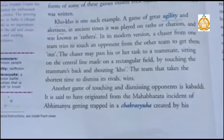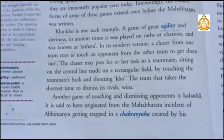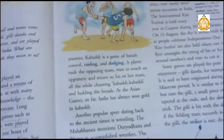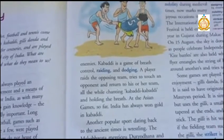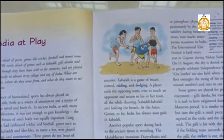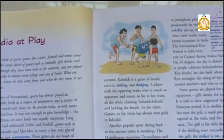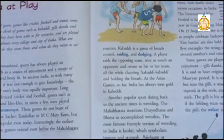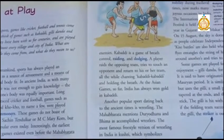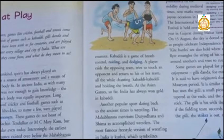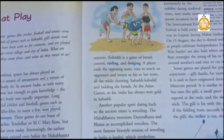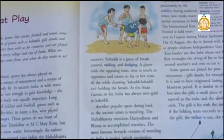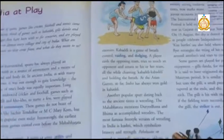The second game is Kabaddi. It is said to have originated from the Mahabharata incident of Abhimanyu getting trapped in the Chakravyu created by his enemies. Kabaddi is a game of breath control, raiding and dodging. Raiding means entering the area of the opposing team, and dodging means avoiding by moving quickly and returning safely to your own area. A player raids the opposing team, tries to touch an opponent and return to his or her team, all the while chanting 'Kabaddi Kabaddi' while holding their breath. At the Asian Games, India has always won gold in Kabaddi.